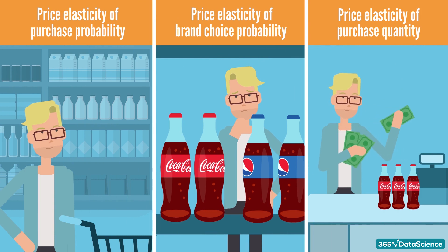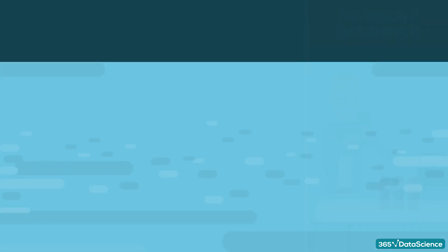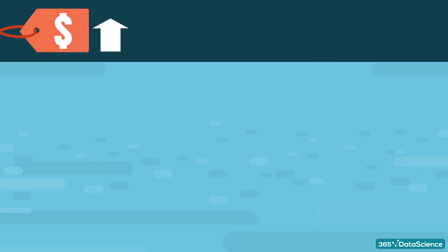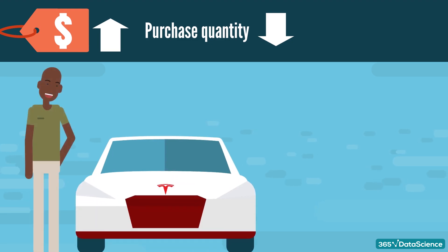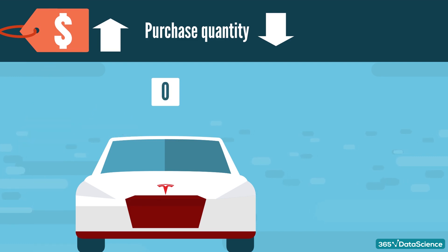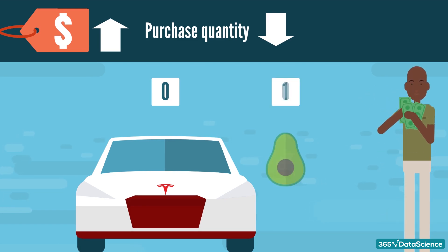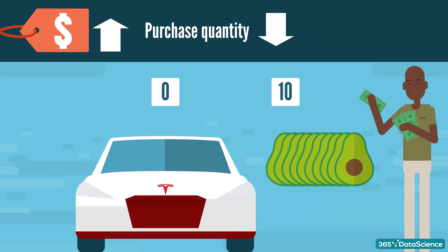Finally, we'll discuss price elasticity of purchase quantity. Following the law of demand, the greater the unit price of a product, the lower the quantity that is going to be purchased. For a car, the difference may be from 1 to 0 — if the price of a Tesla is acceptable to us, we will buy 1 unit; if it isn't, we won't buy any. Alternatively, if we're considering avocados, depending on the avocado price, we may decide to buy 0, 1, or even 10 avocados at once. Calculating the price elasticities will show us exactly how the purchase quantities move with the change in price.